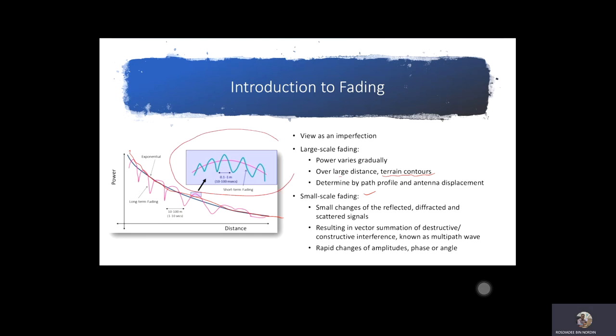If you look at the graph, small scale fading shows a very rapid fluctuation. The rapid fluctuation occurs due to three different propagation behaviors: reflection, diffraction, and scattering. As a result, the received signal can either experience destructive or constructive interference, which is also known as multipath.